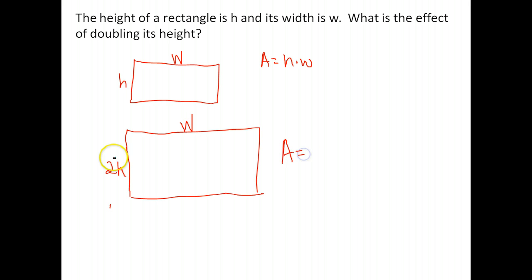Okay, it has to be whatever the height is, which now is 2H, and still times the W. Okay, so notice our area has gone from HW to 2HW, so our area is 2 times what it was, or has doubled.